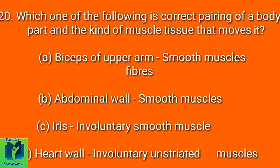Which one of the following is the correct pairing of body part and the kind of muscle tissue that moves it? Option A: Biceps of upper arm — smooth muscle fibers. Option B: Abdominal wall — smooth muscles. Option C: Iris — involuntary smooth muscles.